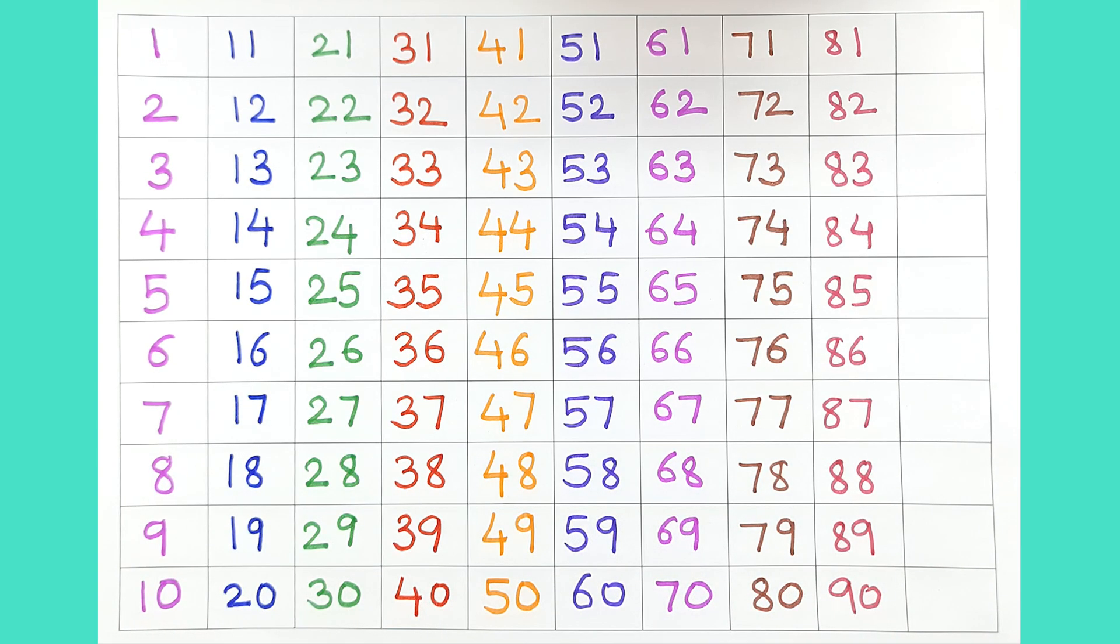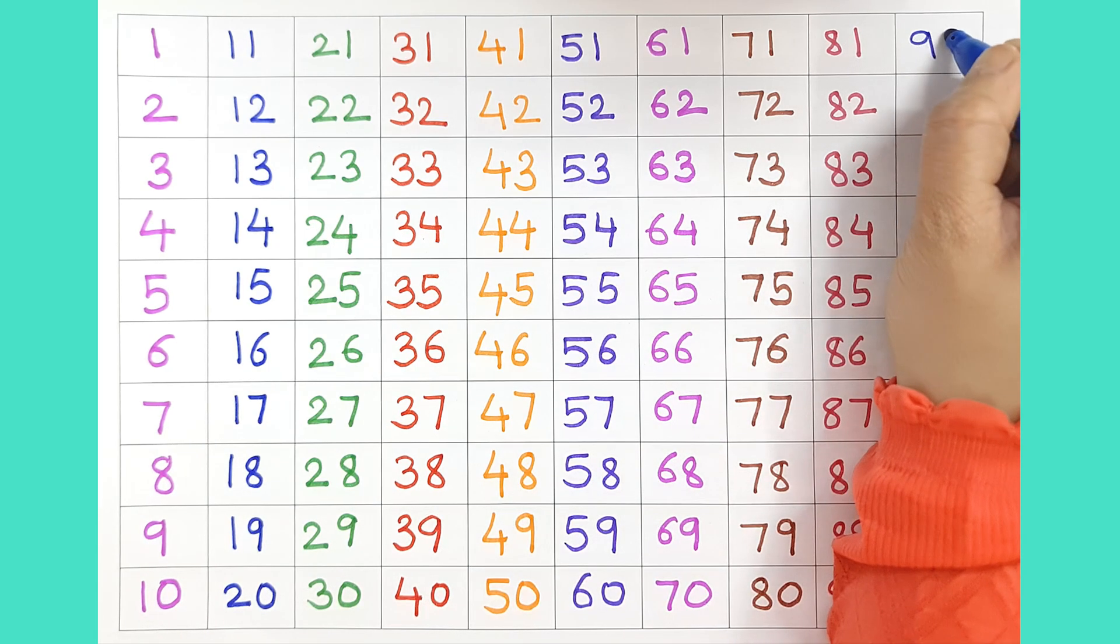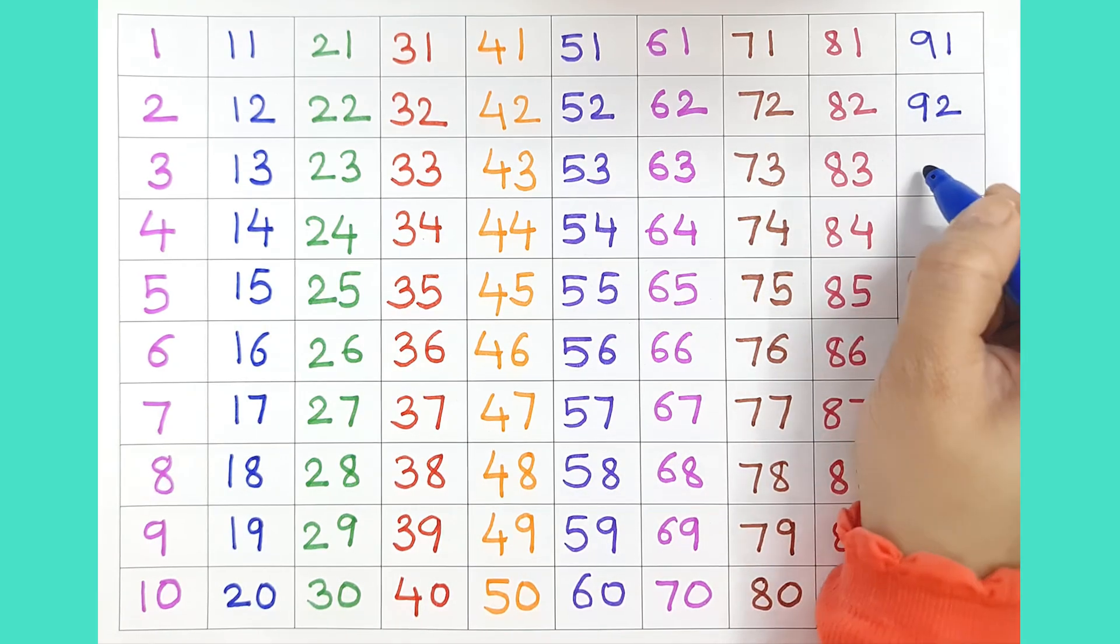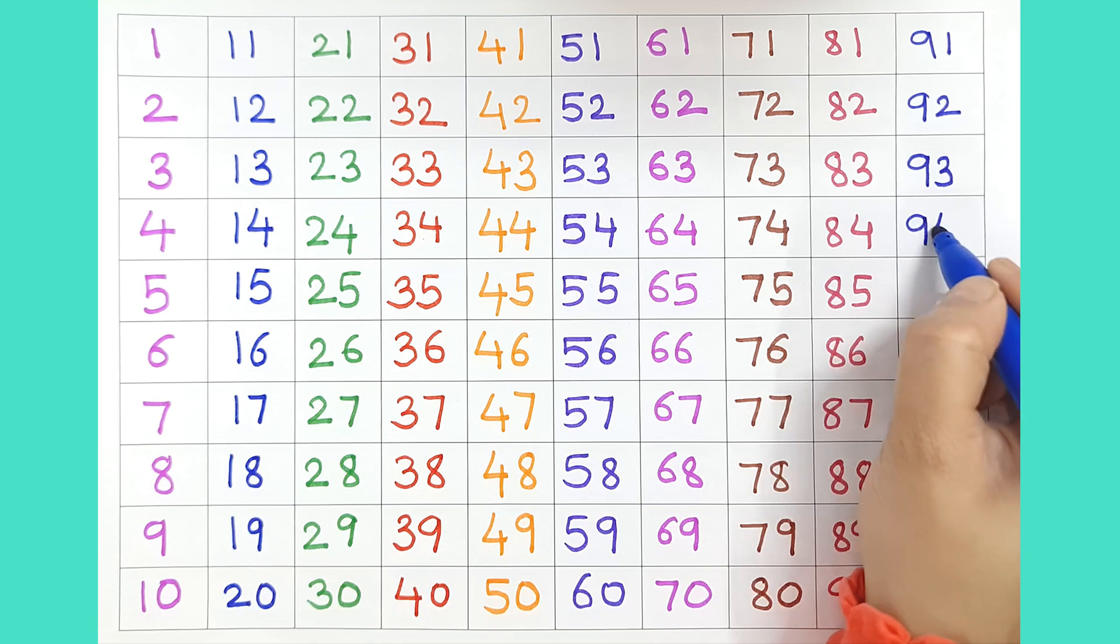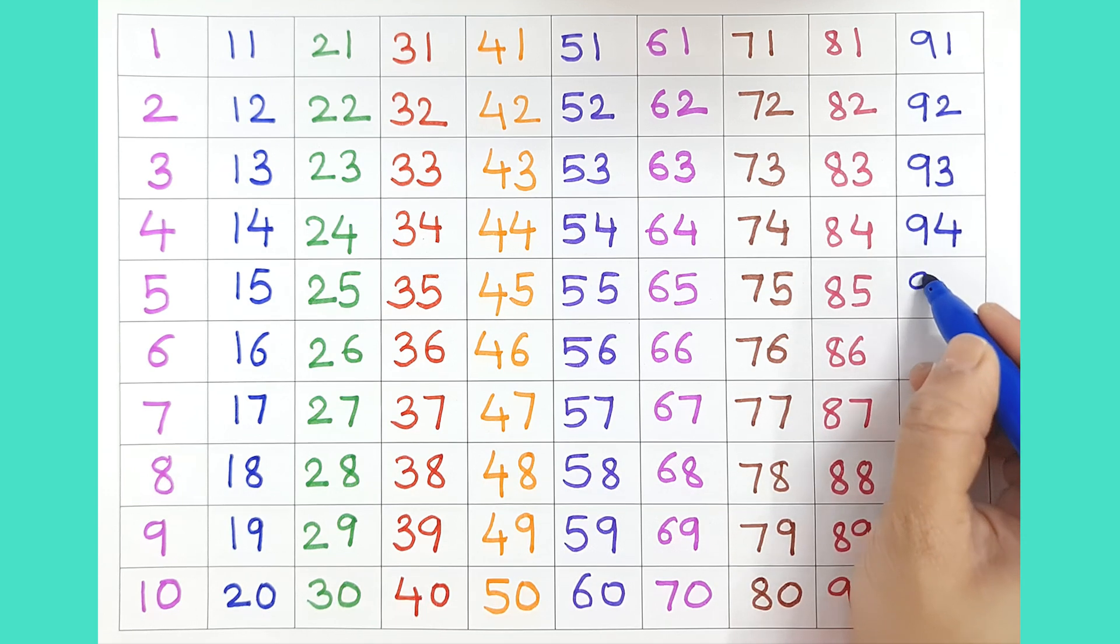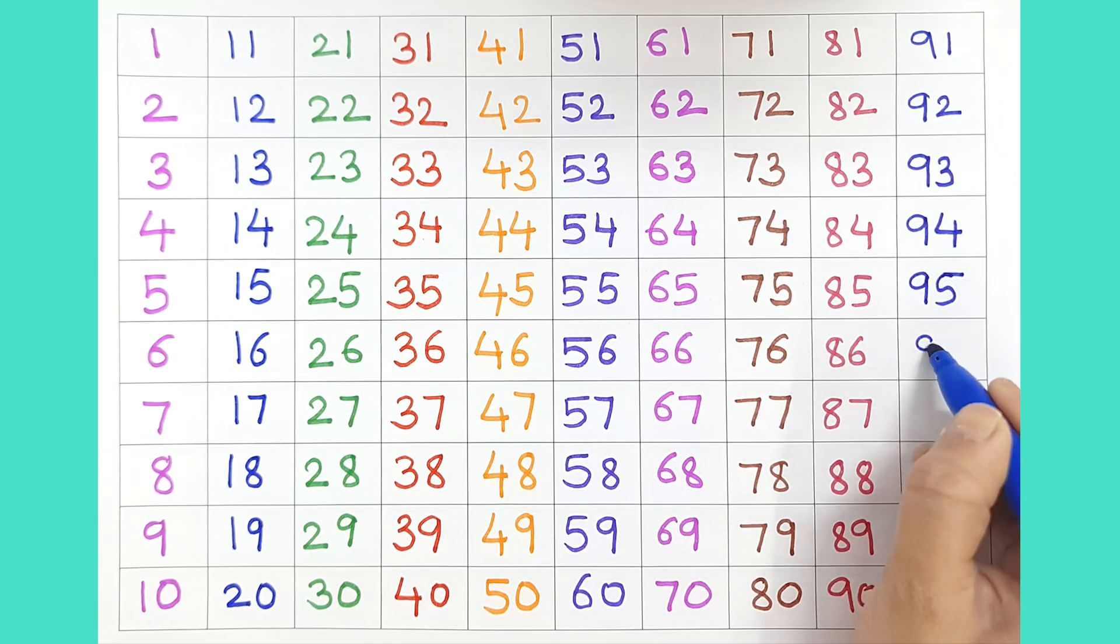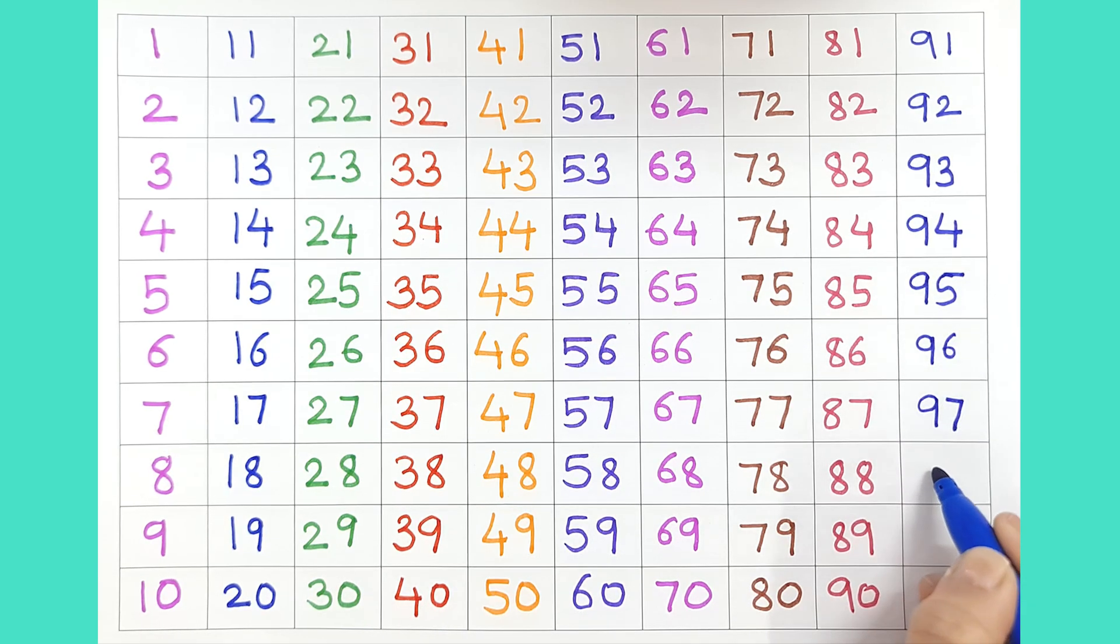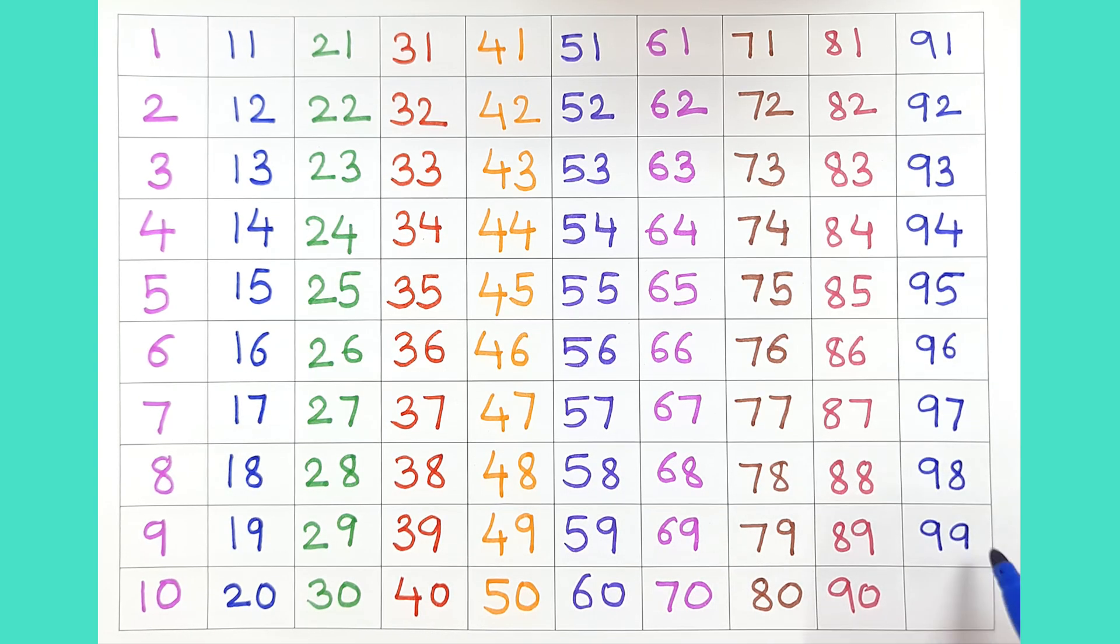Here comes the number 91, 92. Number 93, 94, 95, 96, 97, 98, 99. And the last number is 1, 0, 0, 100.